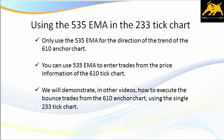You can use the 535 EMA to enter trades based upon the price information of the 610 tick chart. We will notice the slope and look for a correction that touches and bounces above and below the 535 to set up a trade, exactly as we saw in the 610 tick chart. We will demonstrate in other videos how to execute these bounce trades from the 610 anchor chart using a single chart — the 233 tick chart.